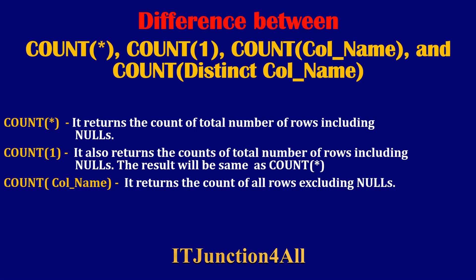Next is COUNT(column_name). It returns the count of all the rows excluding nulls. So wherever you find a COUNT(column_name), you have to take the count excluding nulls.